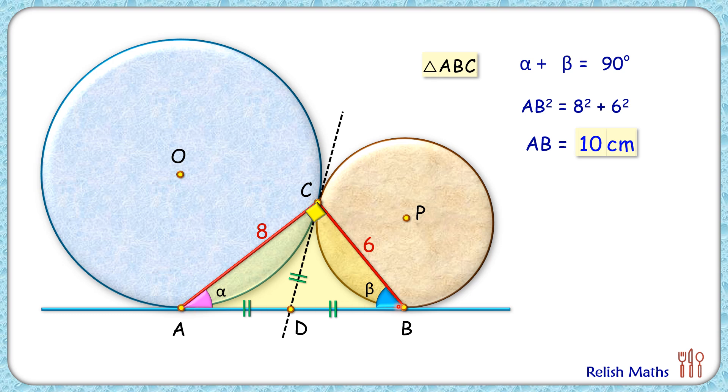As full length AB is 10 centimeter, thus AD will be 5 and DB will be 5. Also DC length will be 5 centimeter.